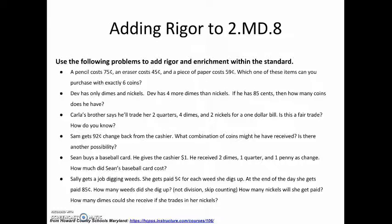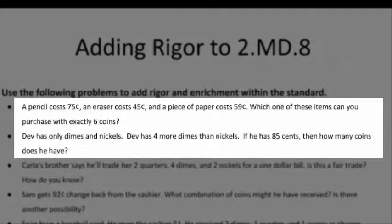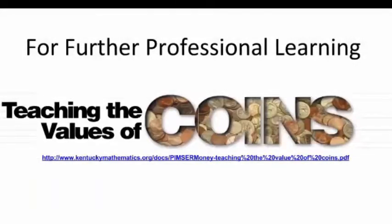Requiring students to make change and fair trades is a great way to add rigor and enrich daily activities. Using open-ended questions with multiple solutions encourages problem solving and critical thinking. Here are examples of different questions you may use to add rigor to daily activities and assessments — keep in mind these types of questions are for all students, not just gifted and advanced. Take a moment to pause the video and try the first two problems on this slide. For further professional learning, please see the outstanding article published in the 1999 edition of Teaching Children Mathematics. We hope you and your students will have great success with Standard MD8. Visit GeorgiaStandards.org for more great resources.